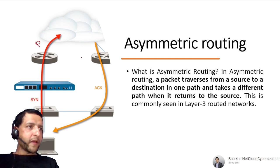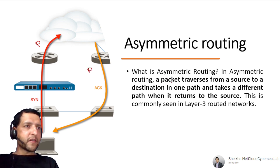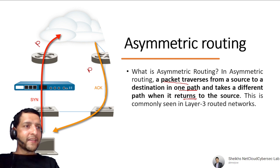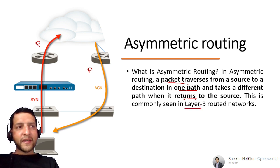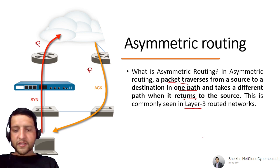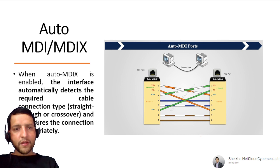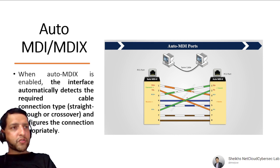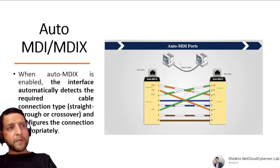Asymmetric routing occurs when a packet travels from source to destination via one path, but the reply returns via a different path — it is not symmetric. This is commonly seen in Layer 3 routed networks.